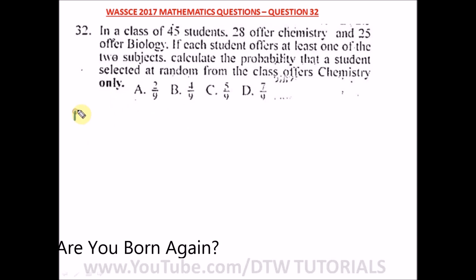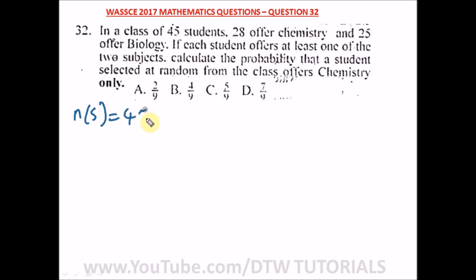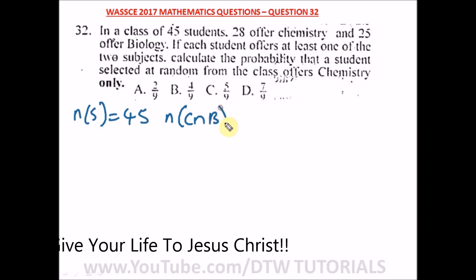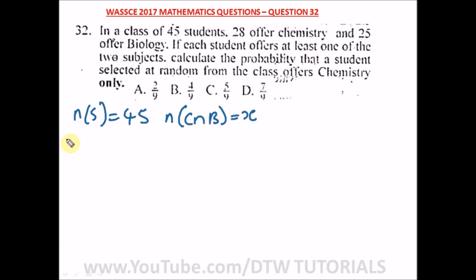Let's identify some parameters. The total number of students in the class is 45. Let the number of students that offered both chemistry and biology be x, so C intersection B equals x. The number of students offering chemistry alone will be 28 minus x, since each student offers at least one subject.